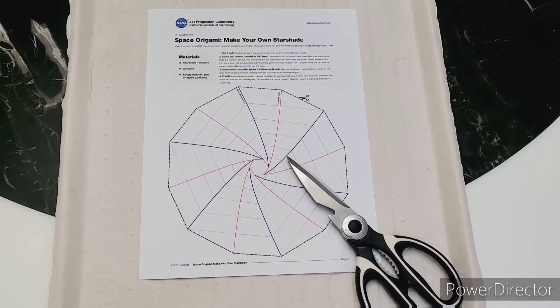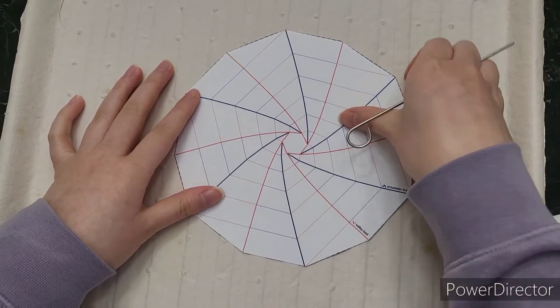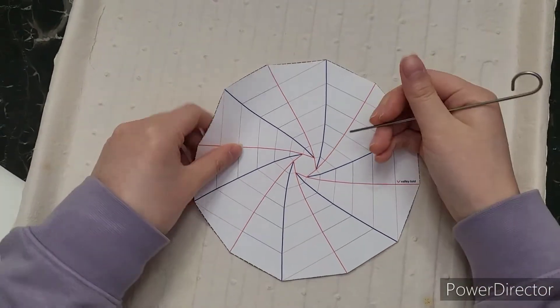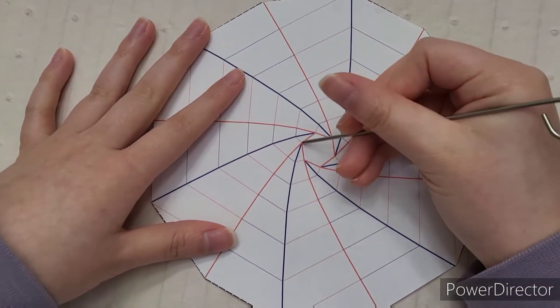To start, cut out the template indicated by the dotted lines. I had this cool looking pointy metal object lying around to score the paper, but if you don't have something like this, you could always use a pen with no ink. I am using that to create creases on the red lines to make valley folds.